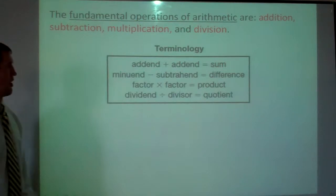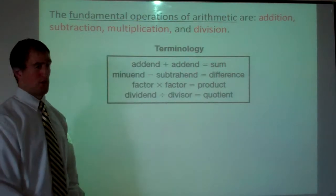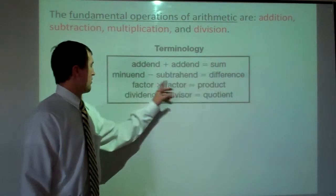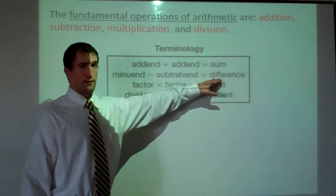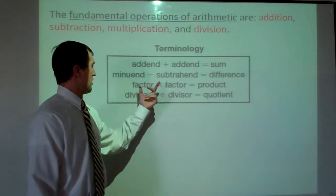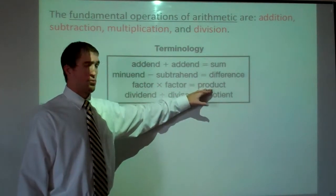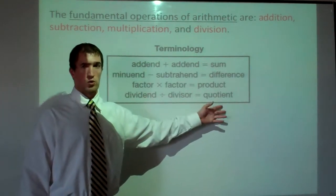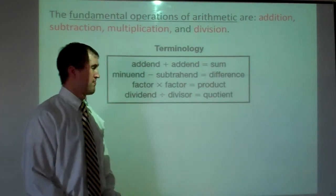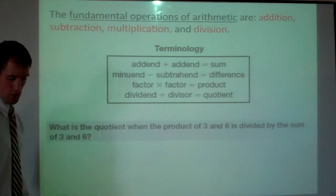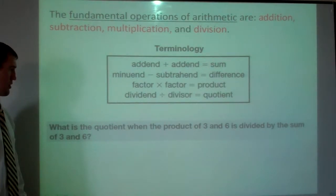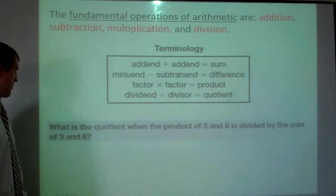Just some terminology here: if we're adding two things and we get an answer, we call that the sum. We subtract two things, we get a difference. If we multiply two things, we get a product. And if we divide something, we get a quotient. So real quickly here, what is the quotient when the product of three and six is divided by the sum of three and six?